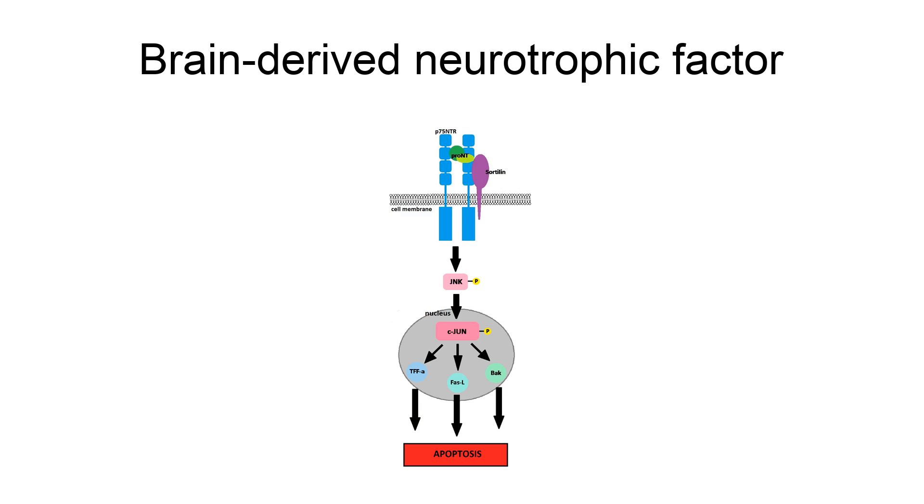Expression can be seen in the retina, the CNS, motor neurons, the kidneys, and the prostate. Exercise has been shown to increase the amount of BDNF and therefore serve as a vehicle for neuroplasticity.